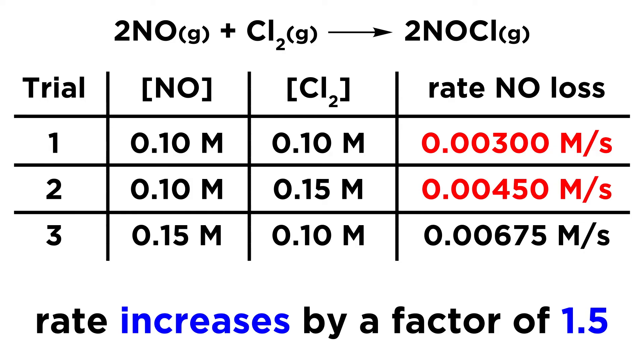Now, a lot of times when we're using initial rates data, we are seeing concentrations double and that makes the arithmetic nice and tidy. But we won't always see that. It's not always so convenient. So we need a way to determine the rate law when these concentrations are not doubling but are instead varying by some other factor.